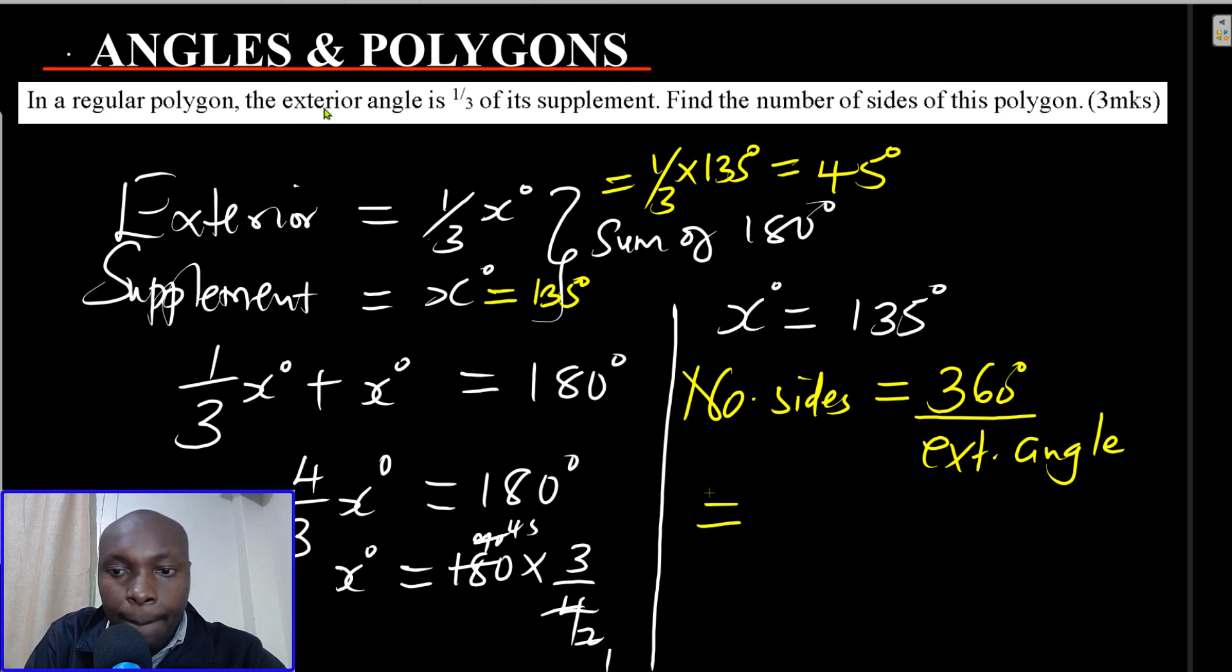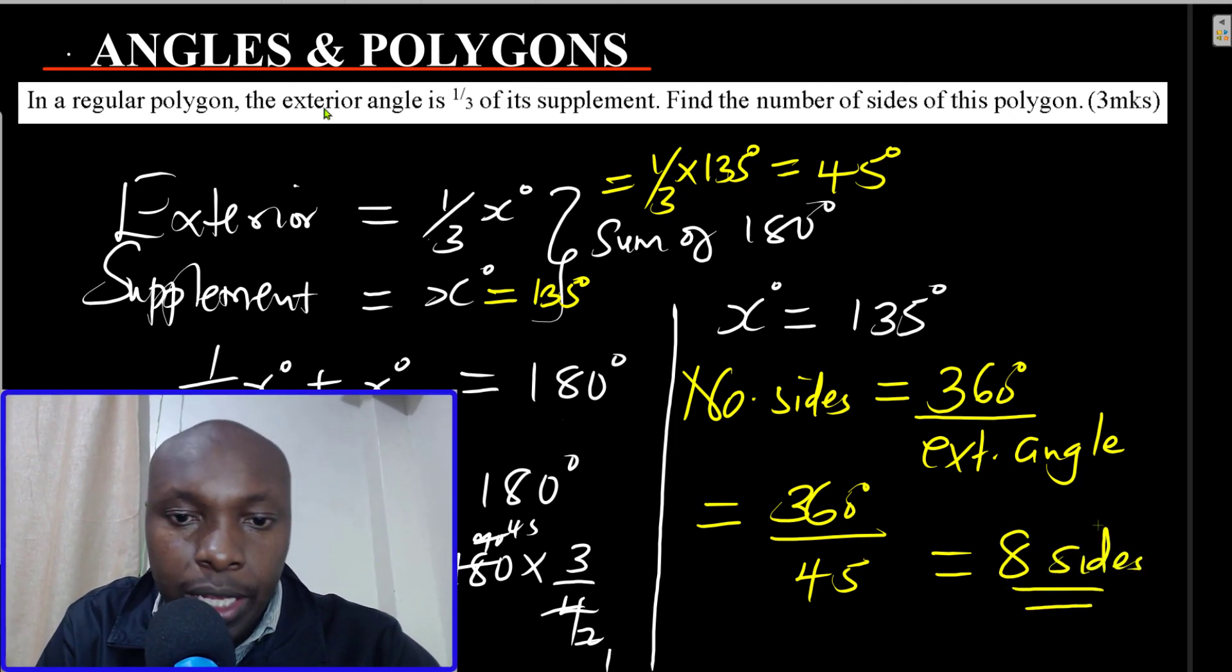So in this case, we have the exterior angle. The exterior angle is 45. So you just need to divide. And when you divide these, this will give 8 sides. And that is how you're supposed to solve that question. Thank you.